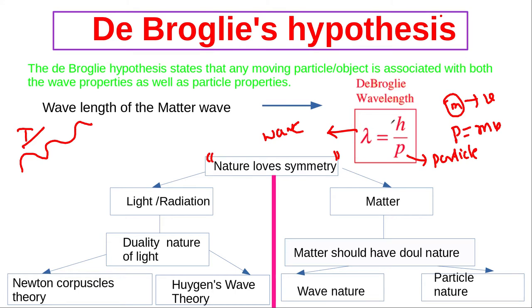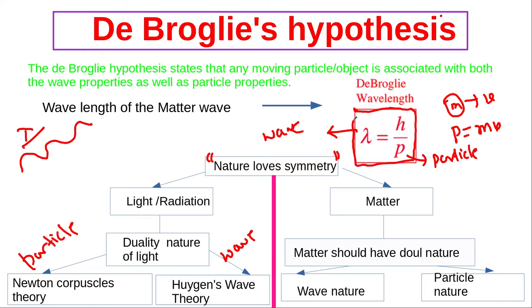This formula came to de Broglie's mind from the natural law of symmetry. Before deriving the formula, de Broglie knew that light and radiation have dual nature: the particle nature explained by Newton's corpuscular theory, and the wave nature explained by Huygens' wave theory. de Broglie thought that since nature loves symmetry and light can show both particle and wave character, matter should also have dual nature — both wave nature and particle nature.